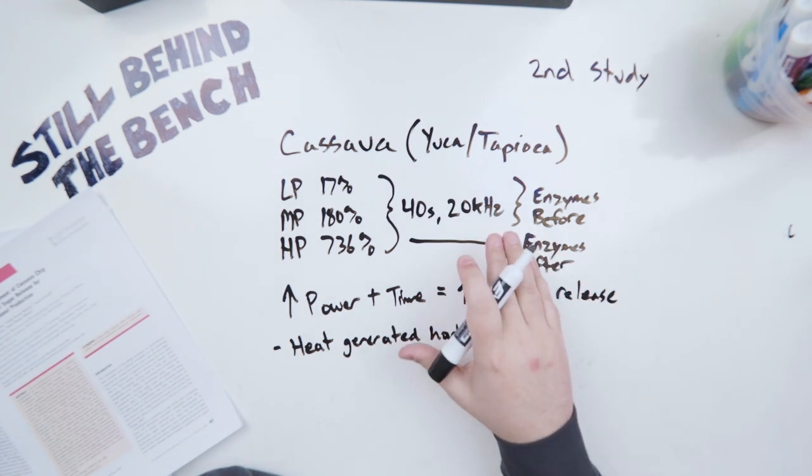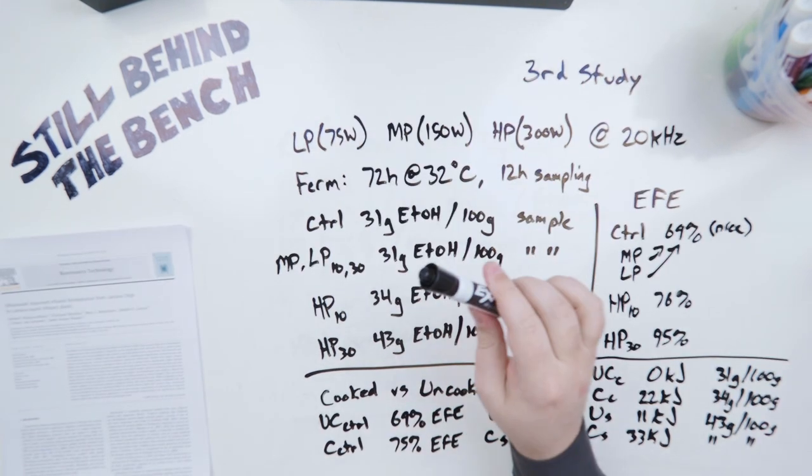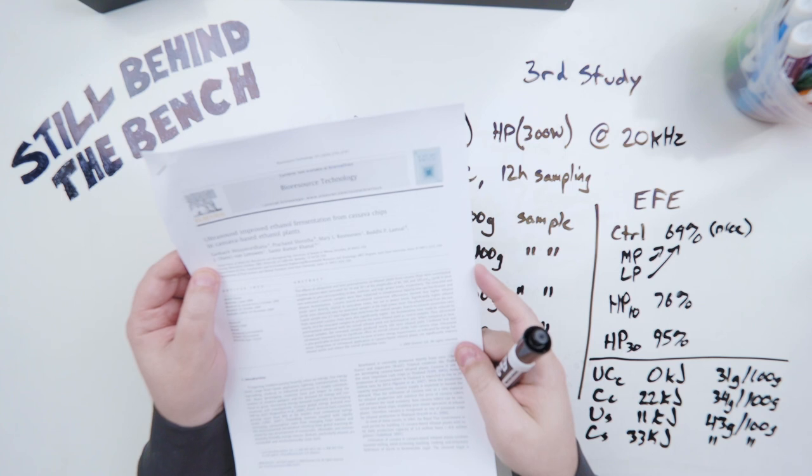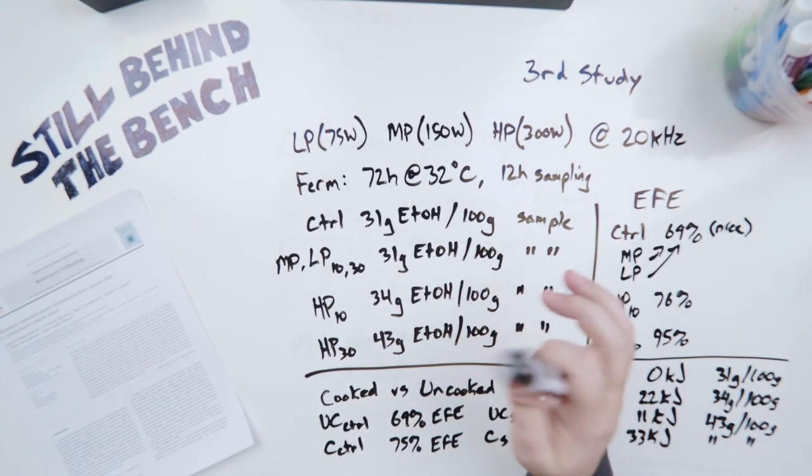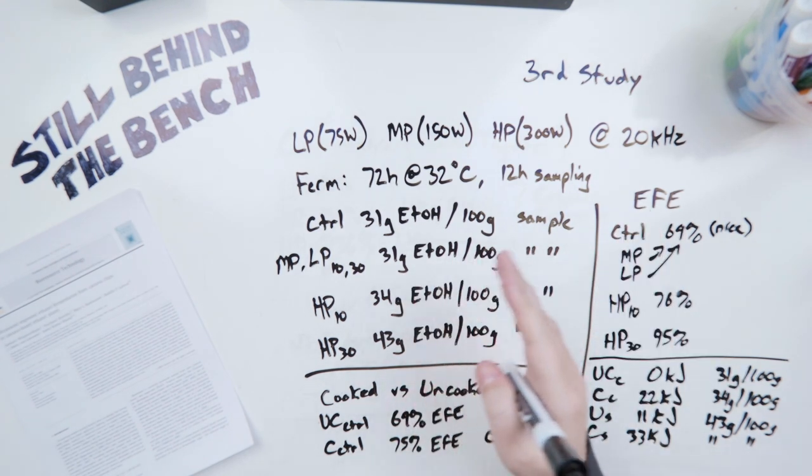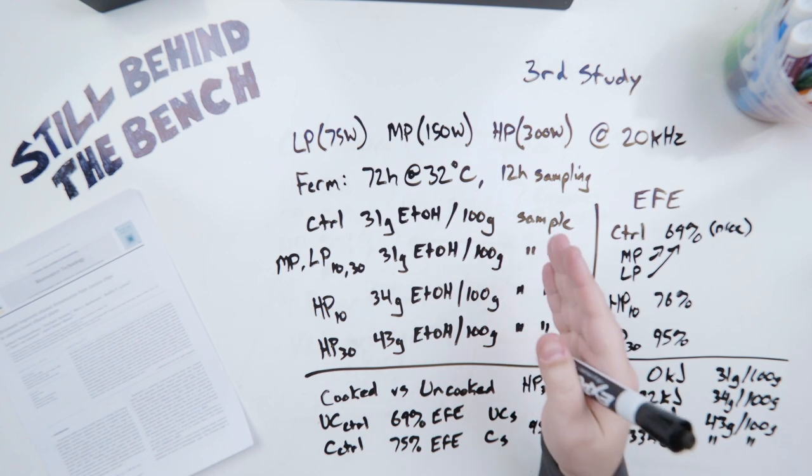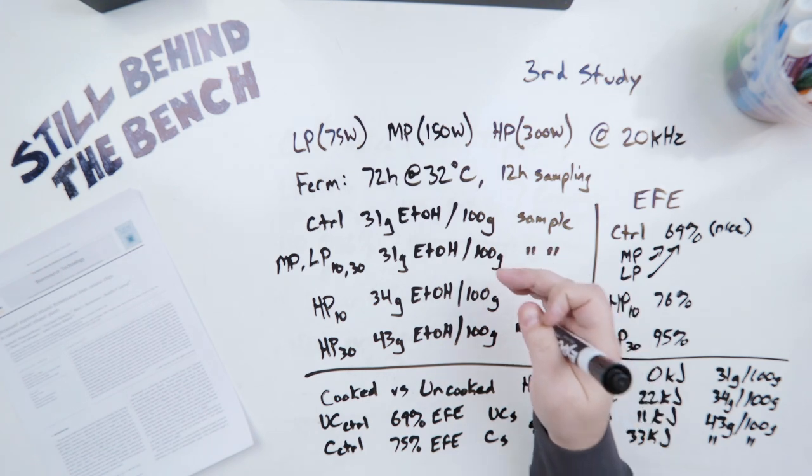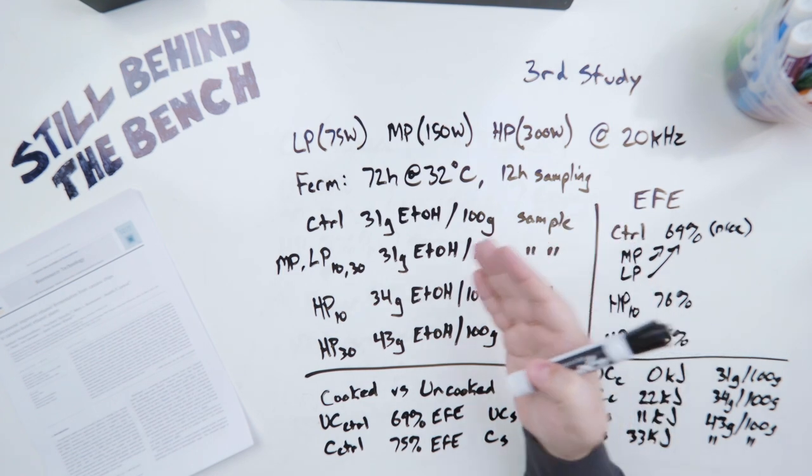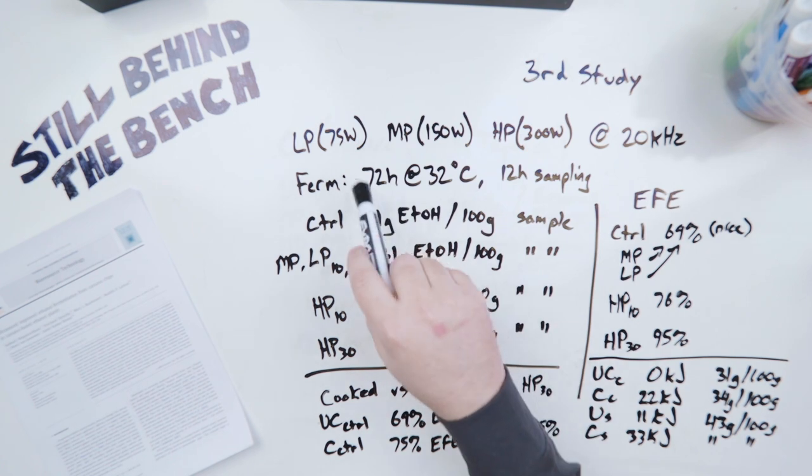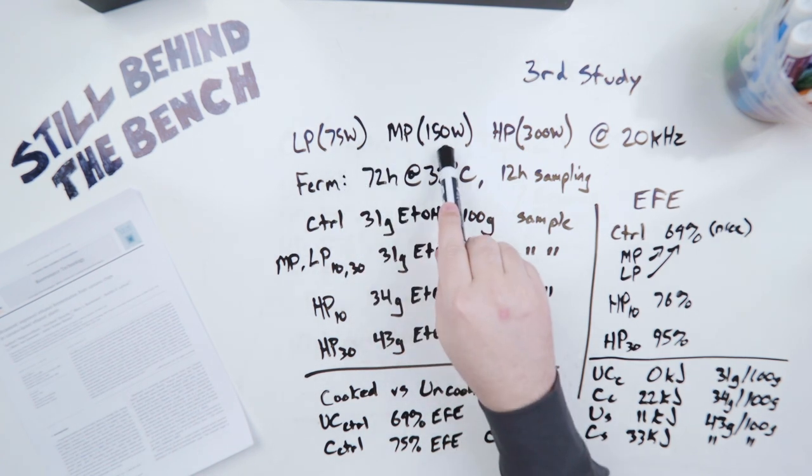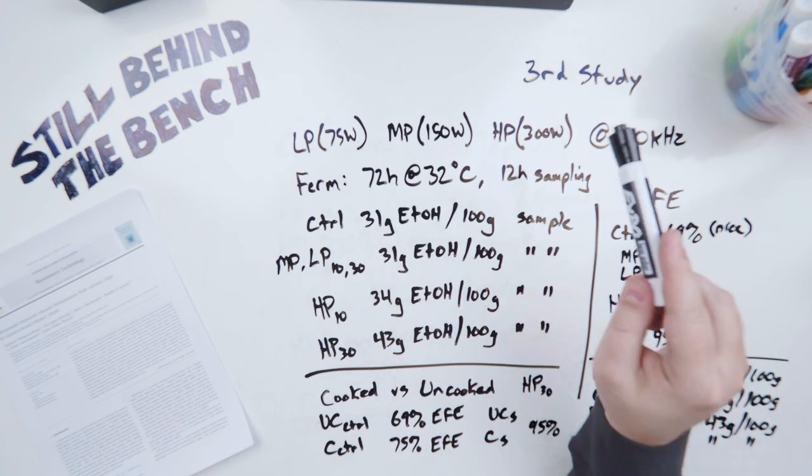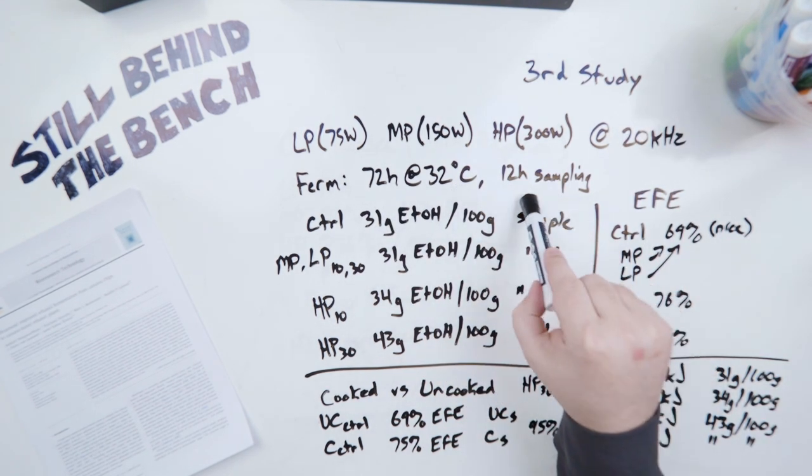The third study is even more interesting because they also did fermentation directly after. The third study is ultrasound improved ethanol fermentation from cassava chips in cassava based ethanol plants. For this study again they did cassava but this time they only ever added the enzymes afterwards. They also added yeast to ferment with along with a yeast extract for nutrients. They did a cooked versus uncooked determination and their cooking method was they would make a 5% total solid slurry. So 5% of this liquid was solid cassava. They put it in a steamer cabinet for 15 minutes at 95 degrees celsius. Their power ratings were 75 watts for low power, 150 watts for medium power, and 300 watts for high power. Again all at 20 kilohertz. Their fermentation was 72 hours at 32 degrees celsius and then they did sampling at every 12 hours.